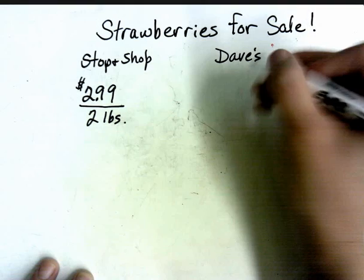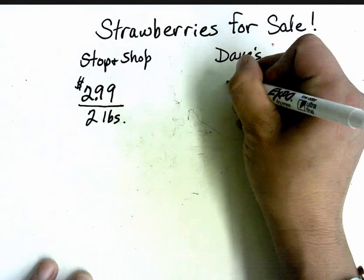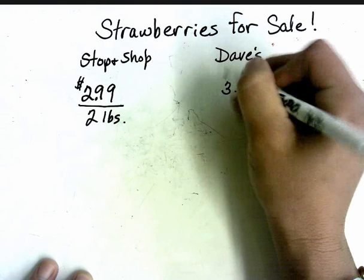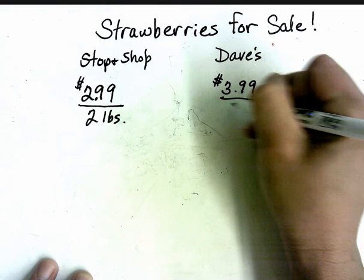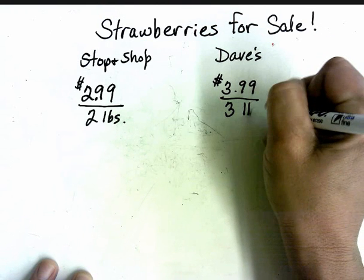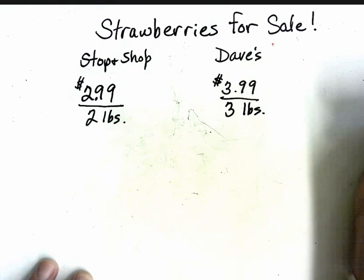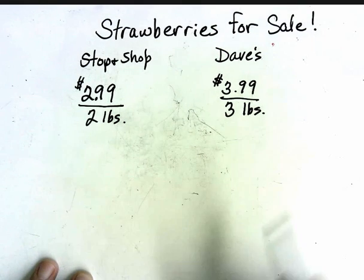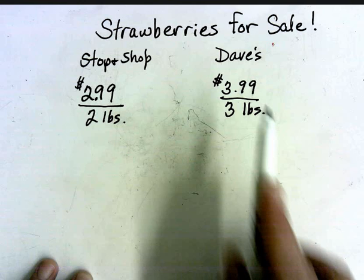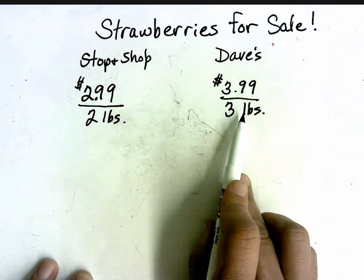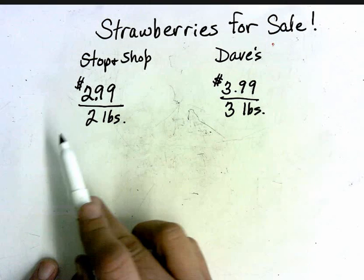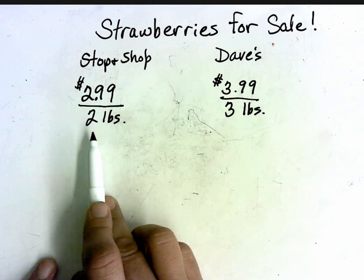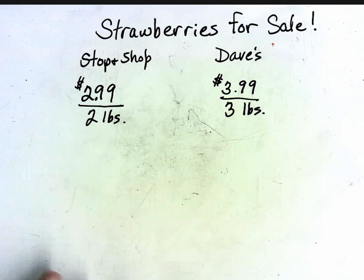Dave's has strawberries on sale for $3.99 for 3 pounds. Part of the problem with this is I really can't tell how much it is per pound here and how much they are per pound here. So I have to go as low as I can possibly go.